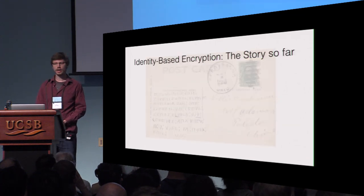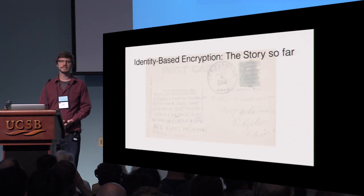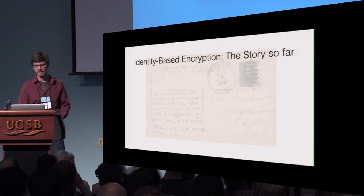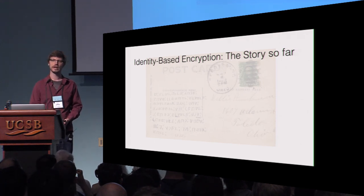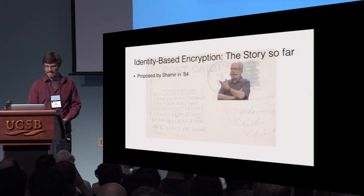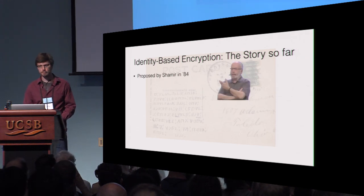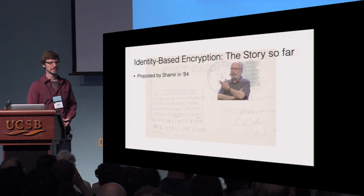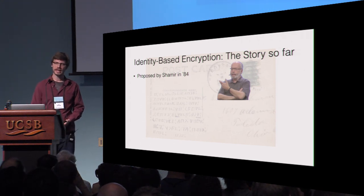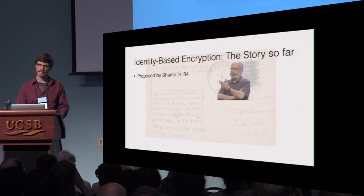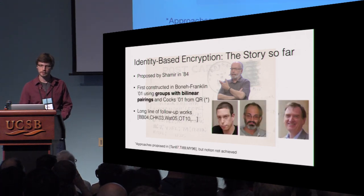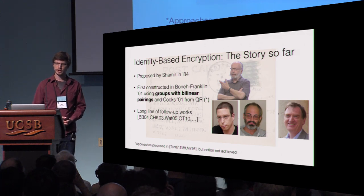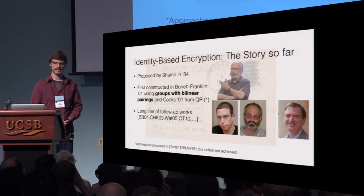The notion of identity-based encryption was famously introduced by Shamir in 1984, however without providing a construction. 17 years later, Boneh and Franklin found a construction based on bilinear groups, and Clifford Cocks provided a construction based on the quadratic residuosity assumption. Furthermore, we also know constructions from the LWE problem.